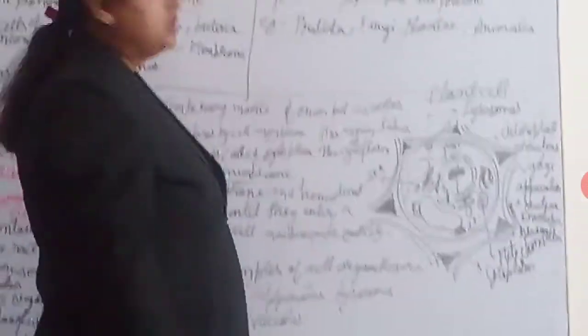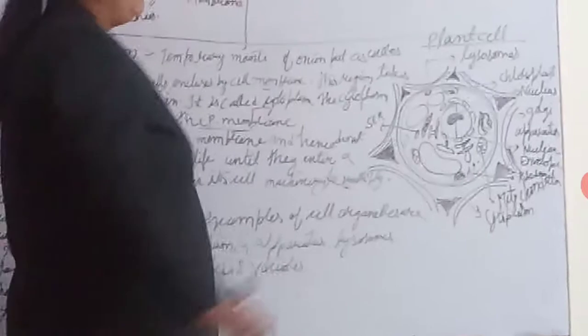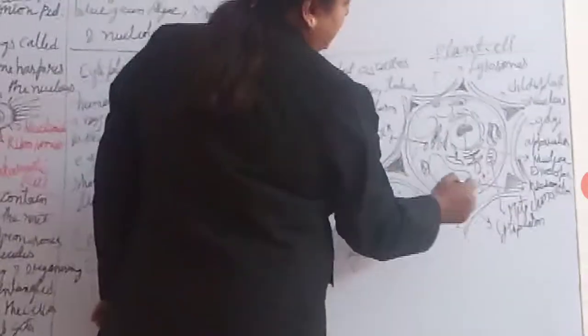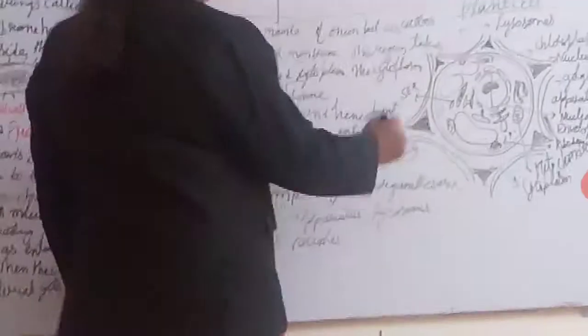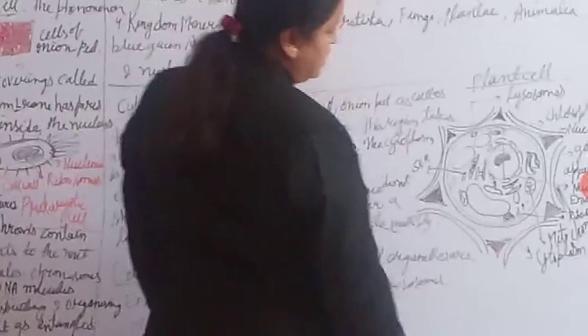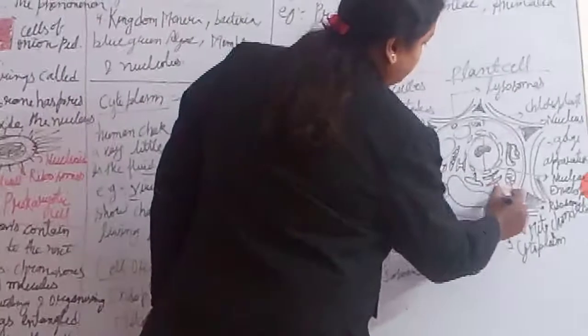Here you can see chloroplasts. The chloroplast contains chlorophyll pigment and is responsible for making food for the plants and providing glucose to all parts of the plant. Also visible are the Golgi apparatus, nuclear envelope, ribosomes, mitochondria, cytoplasm, smooth endoplasmic reticulum (SER), and rough endoplasmic reticulum (RER).